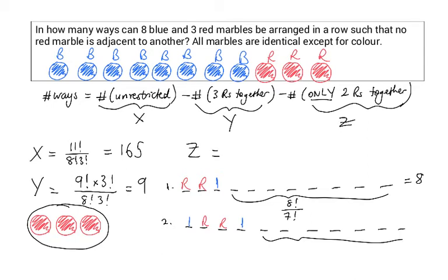And this can be done in 7 factorial divided by 6 factorial ways, accounting for the fact that there are 6 blue marbles that are identical. And this is equal to 7.